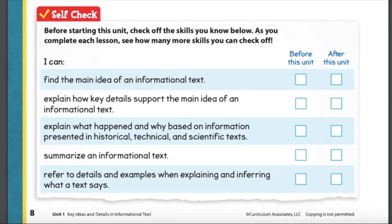To self-check: before starting this unit, check off the skills you know below. As you complete each lesson, see how many more skills you can check off. In a moment, I'm going to ask you to pause the video to look at this checklist. It's important to know that it's okay to leave a spot blank — if you are unsure what something means, or if you think you can only do something a little bit, it's still okay to leave it blank. No one is going through your checklist. Pause the video now and take just a few moments to read each item and either put a check in the before column or leave it blank.